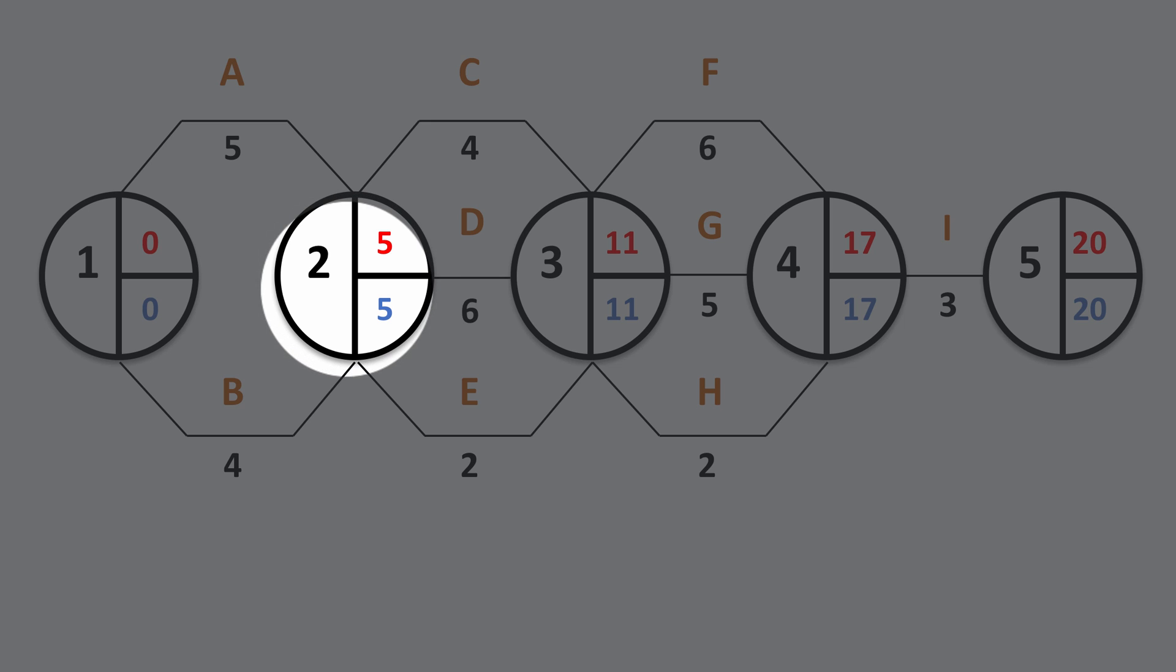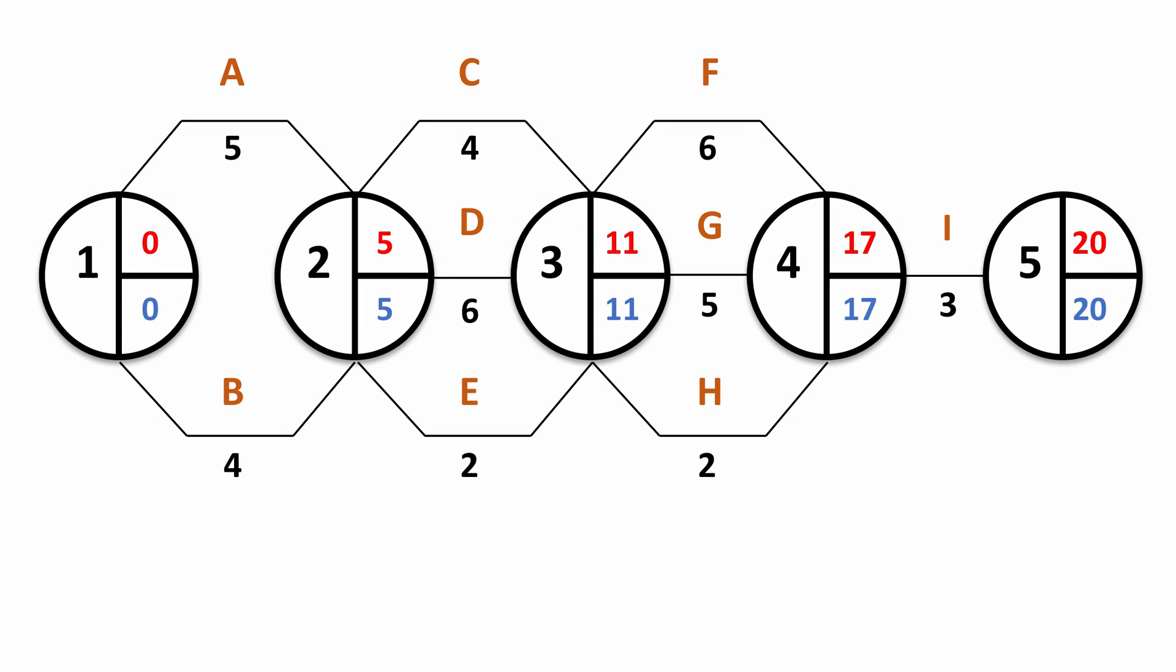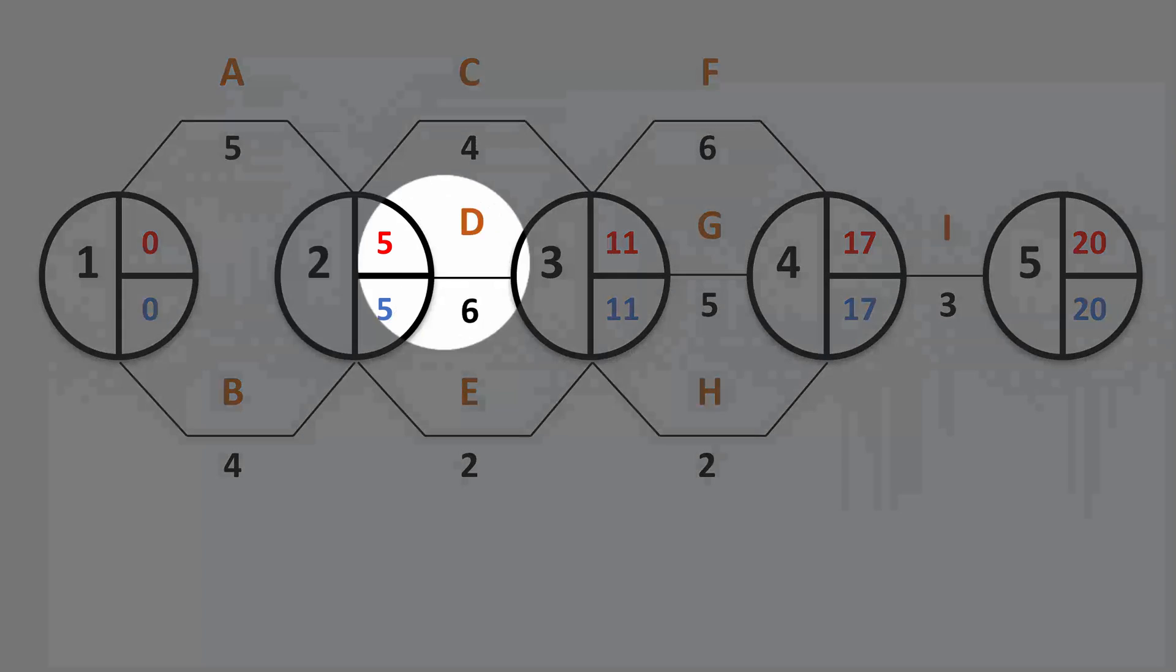C, D and E are the same, no change there. So we can't start F, G and H until those three have been finished. So therefore it must be five plus the longest activity, which is six. Five plus six is 11. The earliest start time for F, G and H is 11.